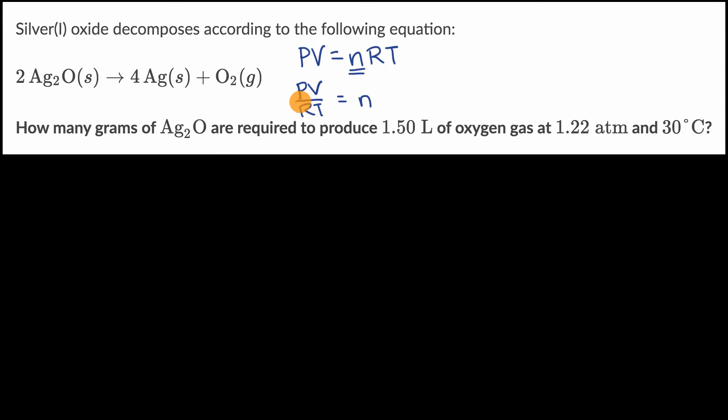It looks like they gave us all of this. The pressure is 1.22 atm, the volume is 1.50 L. We can look up the ideal gas constant, and we just have to convert the temperature to Kelvin. See if you can have a go at this now.